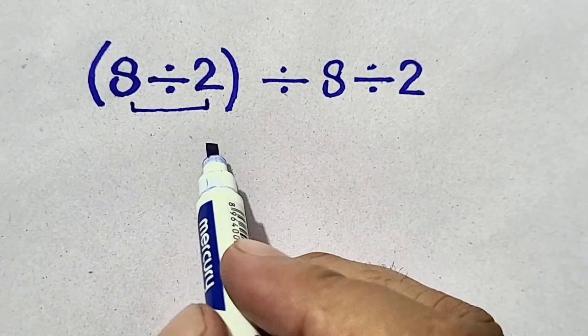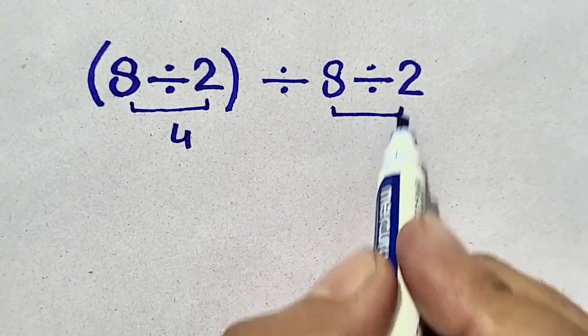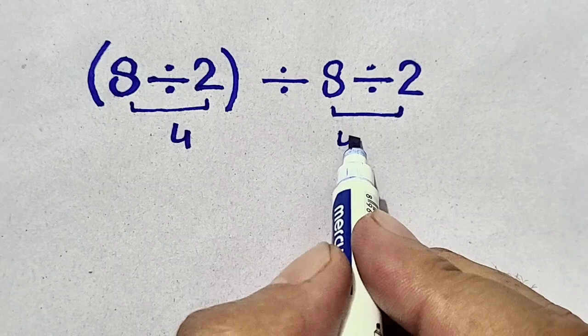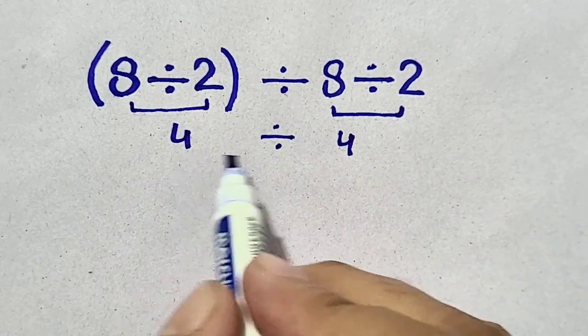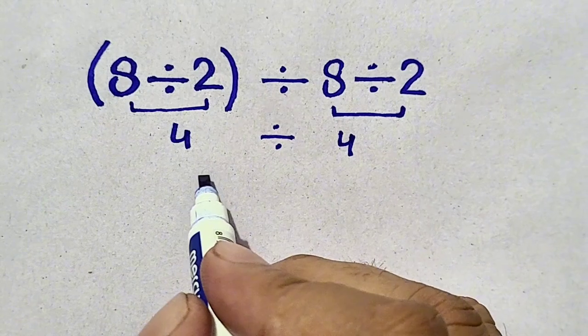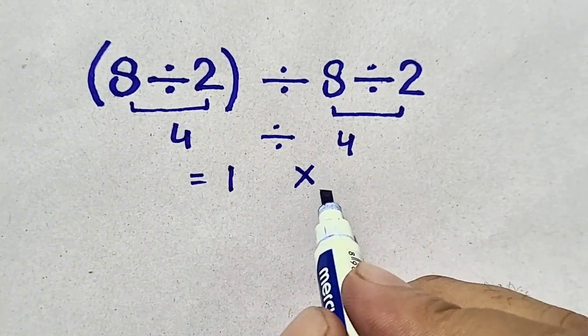8 divided by 2 will be equal to 4, and 8 divided by 2 is also equal to 4. Hence, 4 divided by 4 will be equal to 1. But it is wrong method.